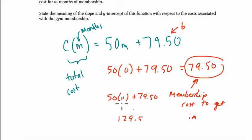That tells me that the number of months are going to be multiplied by 50. So 50 is the cost for every month. So after one month, you've paid 79.50 to get into the gym. Now you've been there for one month, so now you owe them a total of $129.50 because it's $50 for every month after you start. So that's the idea.